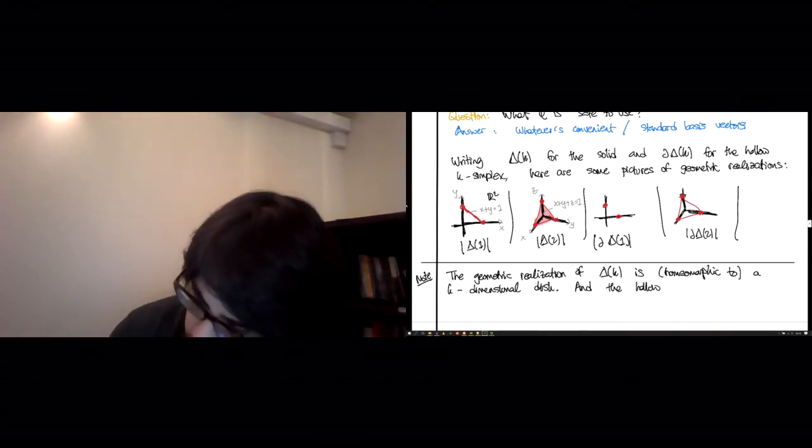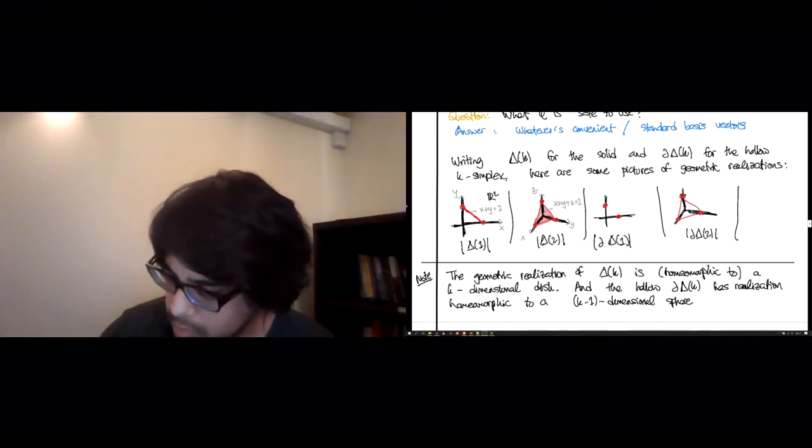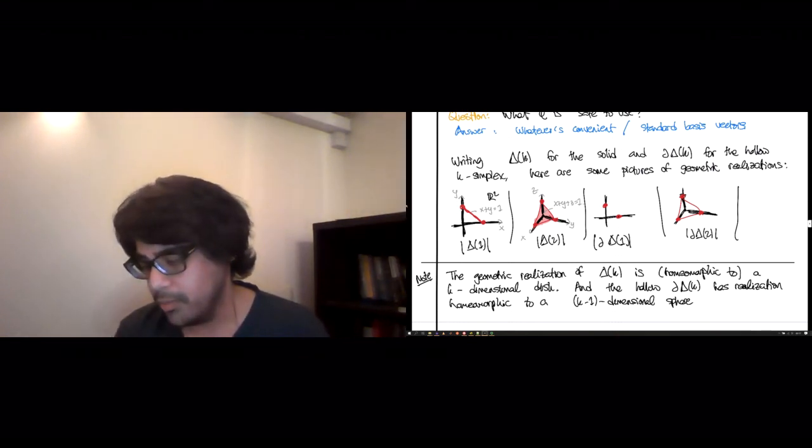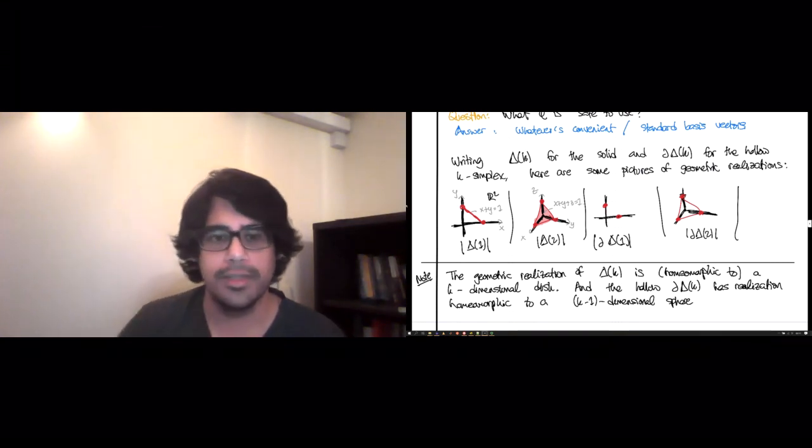And the hollow, this is exactly its boundary. So this is homeomorphic to a k-1 dimensional sphere. So the zero sphere is just two points. And you see that in the third picture that we've drawn. And the one sphere is just a circle. And you sort of see the hollow triangle that's homeomorphic to a circle. Well, so hopefully you now see the beginnings of geometry entering the picture in a very visceral way. And we will see much more of this in the lectures to come.